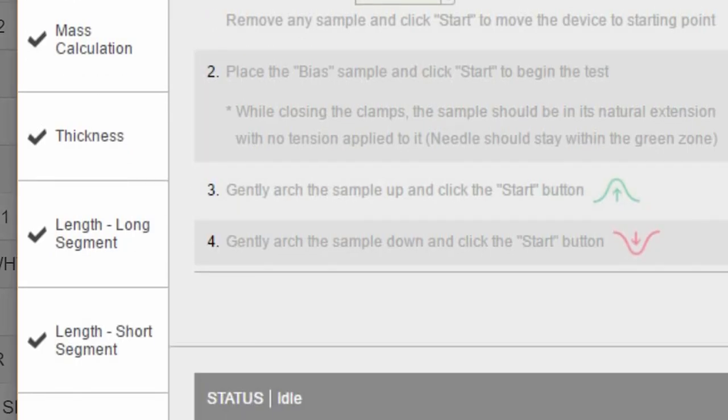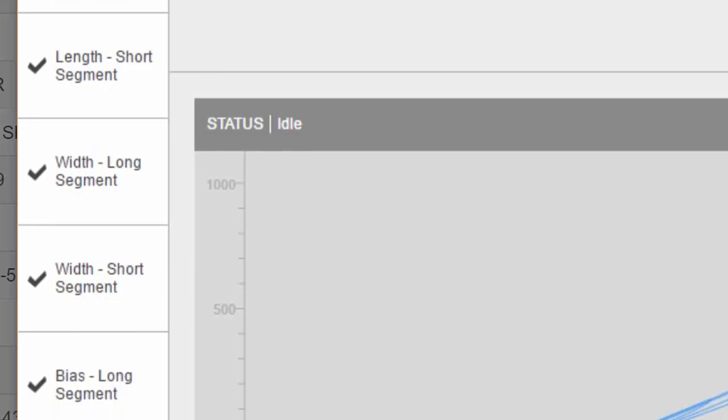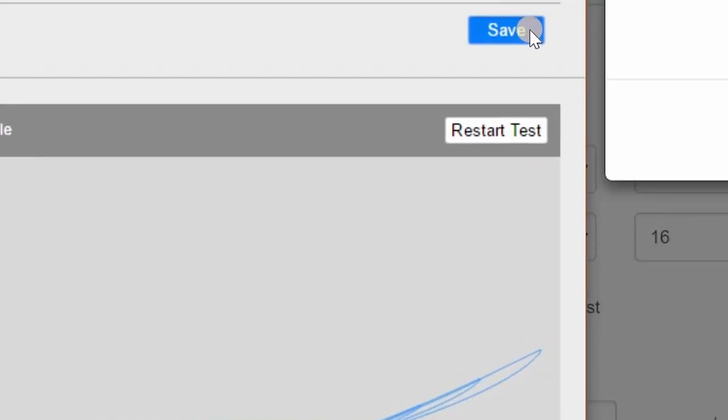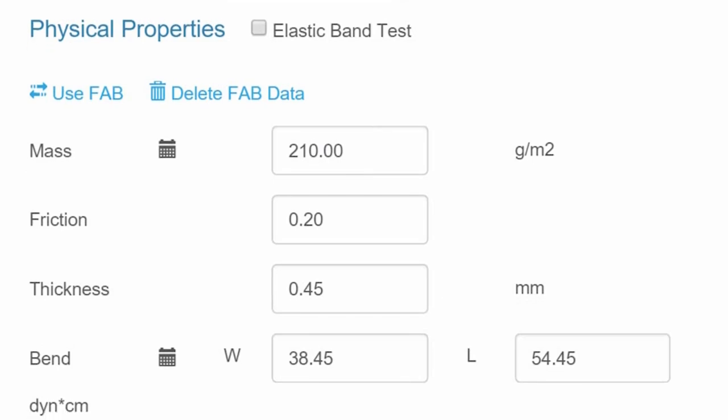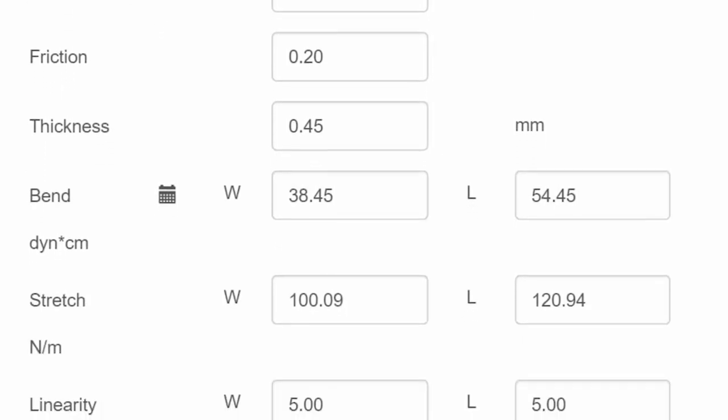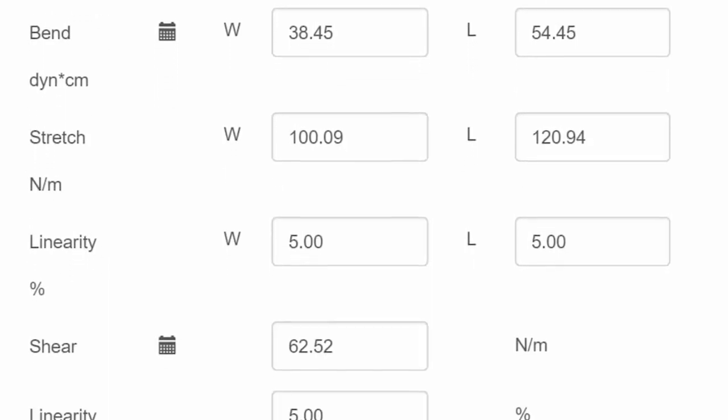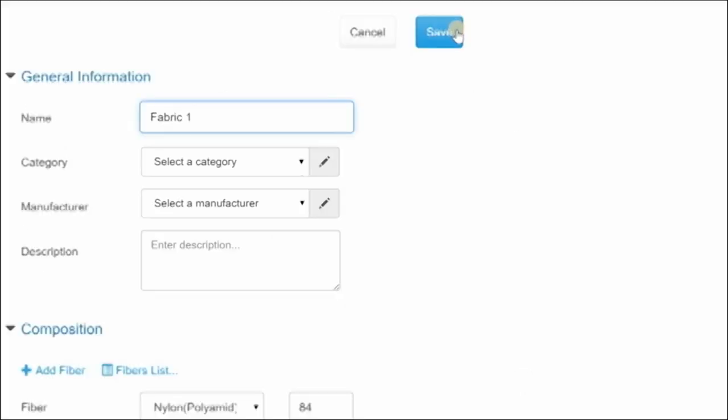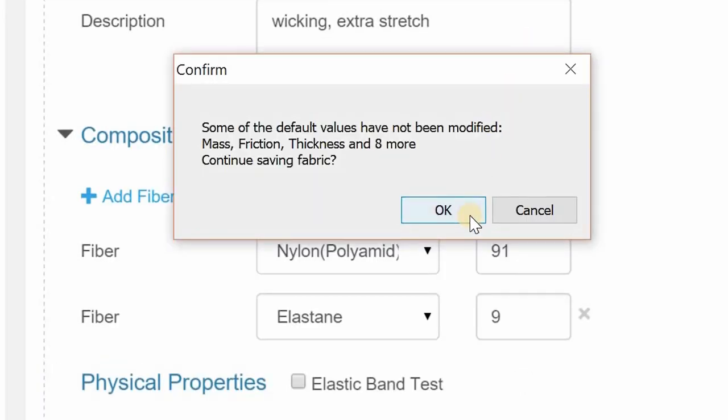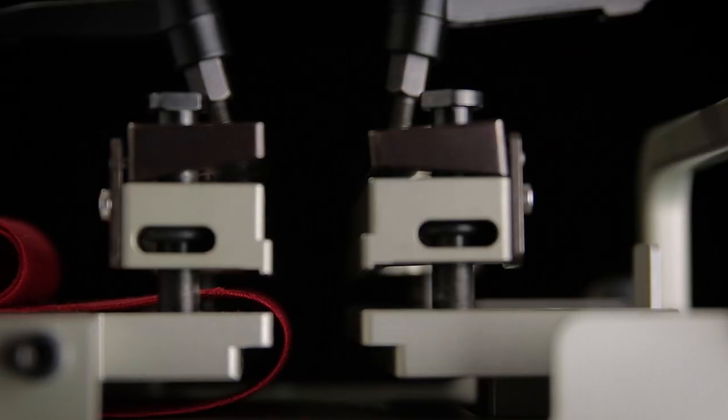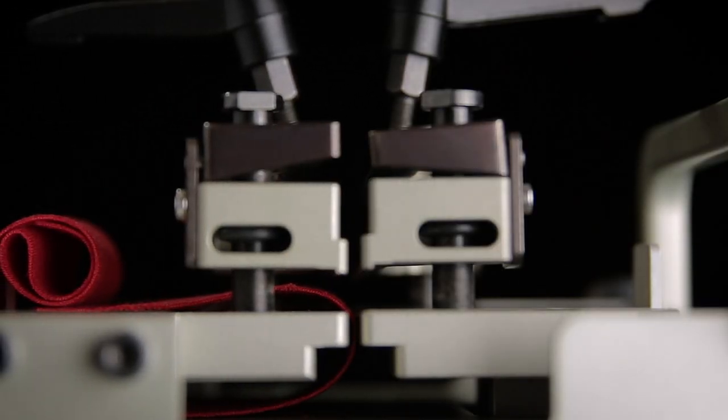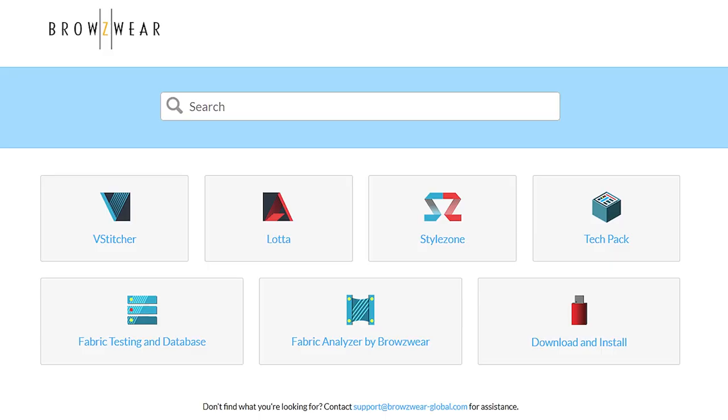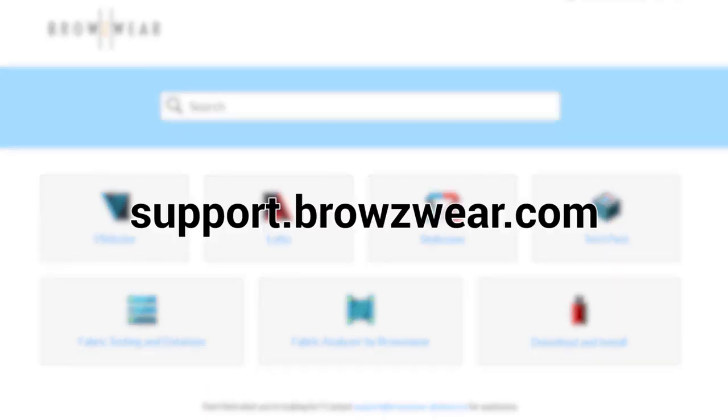When all tests have been completed, a check mark will appear in all the tests. Click the Save button. The FAB window will close and you will return to DB Admin. All physical properties have automatically synced into DB Admin from the FAB testing. Click Save at the top. Finally, click OK on the dialog box. Now that you've completed a full fabric test, you can continue testing other fabrics or exit the DB Admin program. For additional working and safety tips for your FAB, check out support.browseware.com.